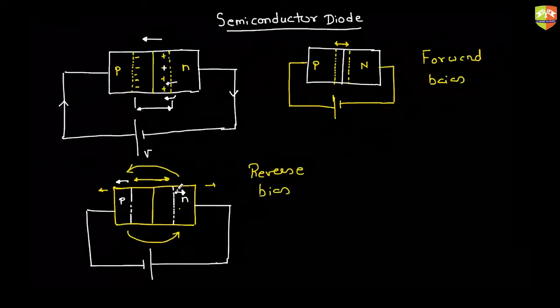In forward bias the diode behaves like a conductor, and in reverse bias it behaves like an insulator. The junction barrier creates a selective path for current — it is unfavorable for reverse bias and very favorable for forward bias. So the flow of current depends not just on external conditions but also on the material and how it is connected.